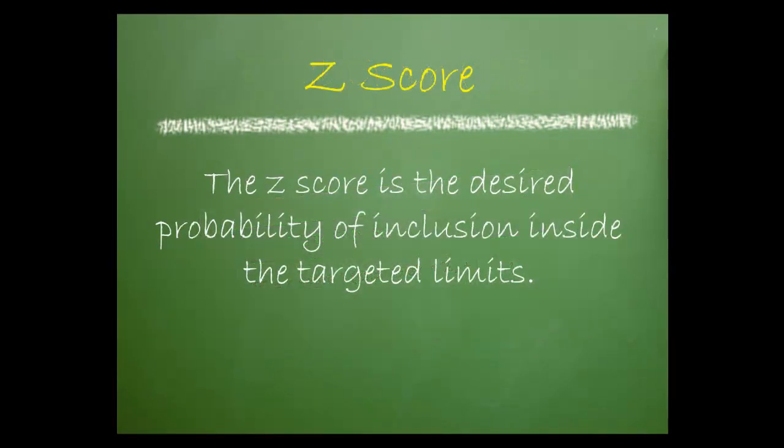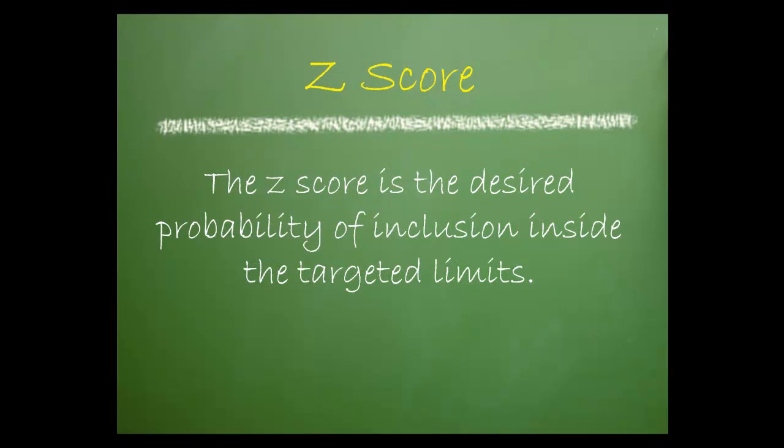We'll start with z-score. The z-score is the desired probability of inclusion inside the target limits.